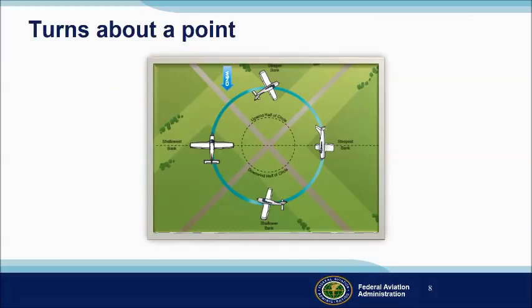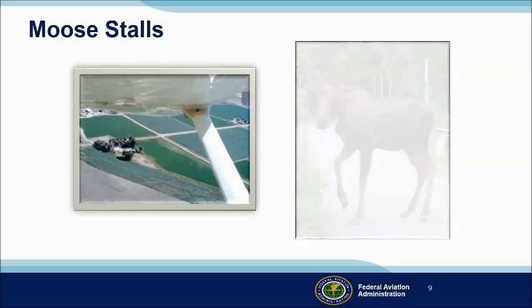Every student pilot has practiced turns around a point — a training maneuver designed to build skill in wind compensation, aircraft ground track control, orientation, and division of attention. We are taught stall awareness, stall recovery, and stall prevention, and we're taught turns about a point. Although we are never taught stall recovery while turning about a point. That's a good thing, because at the altitudes we typically use for ground reference maneuvers, any stall would likely take us dangerously close to the ground, and a spin would ensure we crashed before we could recover.